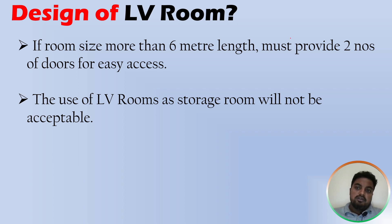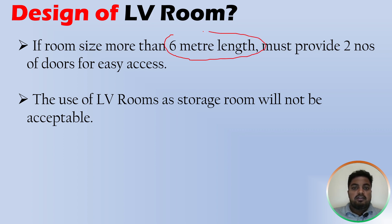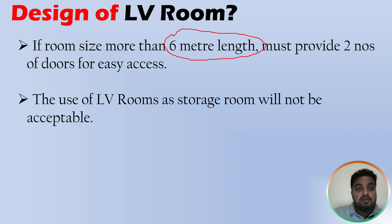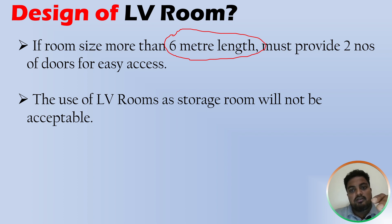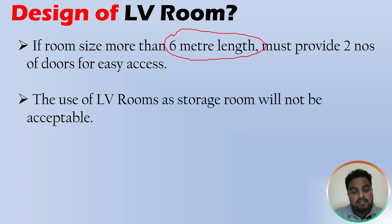If the room size is more than six meters in length, you must provide two doors for easy access. I will explain why the six-meter figure is used in the next slide. The key point to understand here is: if the LV room length exceeds six meters, two entry doors are mandatory.